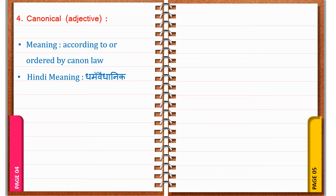Canonical. C-A-N-O-N-I-C-A-L. Canonical. It's an adjective. It means according to or ordered by canon law. In Hindi: Dharma Vaidyanic.